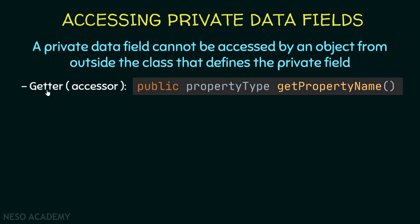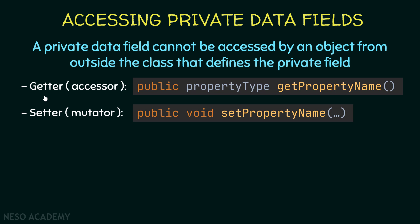To be able to access the private data fields, we will use a getter and a setter. A getter is also called an accessor — it helps us access the value of an attribute. It is a public method because we want to access it anywhere using the dot operator. The return type will be the type of the attribute, and the name is 'get' followed by the name of the attribute.